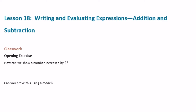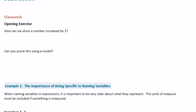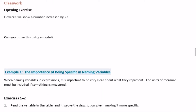6th grade module 4 lesson 18 classwork: writing and evaluating expressions — addition and subtraction. Opening exercise: how can we show a number increased by 2? Let's write this using an expression. A number — I'll call it n — so n increased by 2 means we'll be adding: n plus 2, or we could flip it around and do 2 plus n. You can use any variable you want: a, b, c, d, whatever.